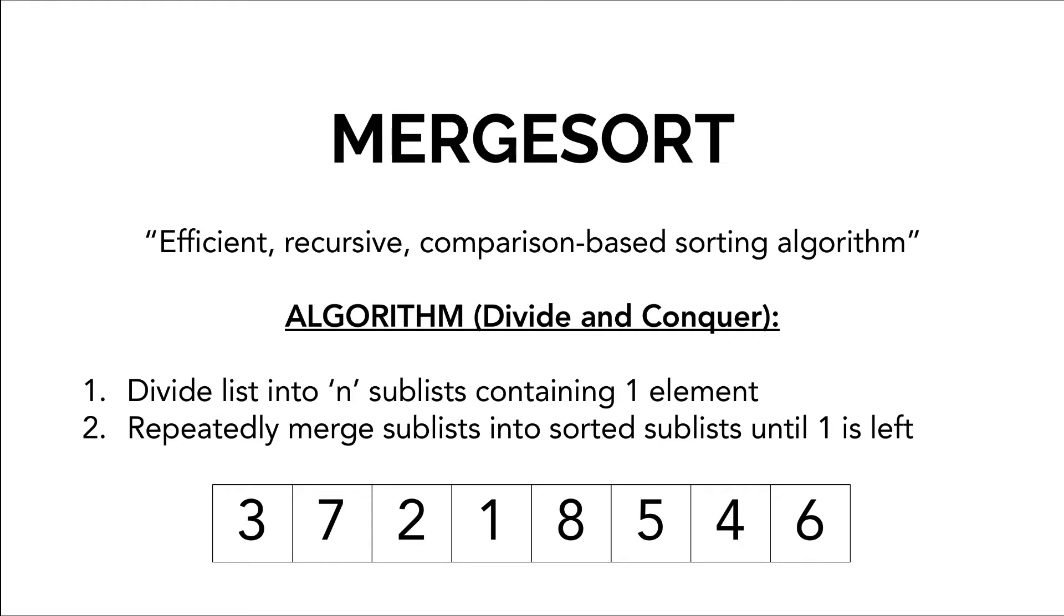What it does is take your array no matter how big it is and continuously divide it until you have n number of one element arrays. For example in our case we have three seven two one eight five four six. Merge Sort would create eight separate arrays that are one item big.